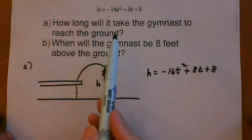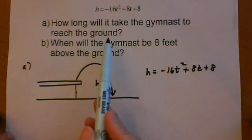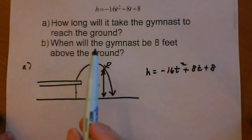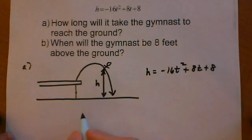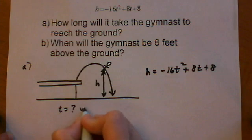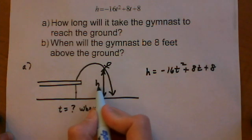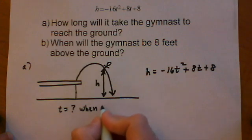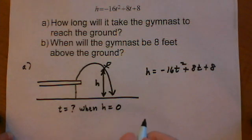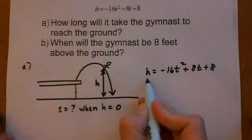Part A, the question is, how long will it take the gymnast to reach the ground? The first thing we need to do is turn that into math speak. So how long will it take, t equals what, when the gymnast reaches the ground? In other words, when the height is 0. So we're going to put h is 0 into this equation and solve for t.